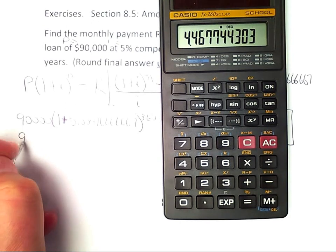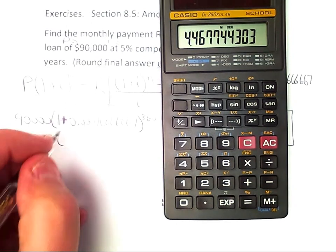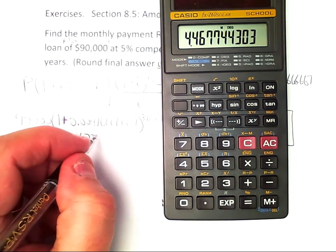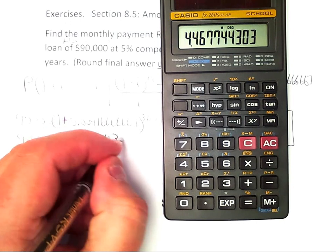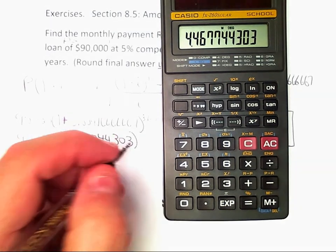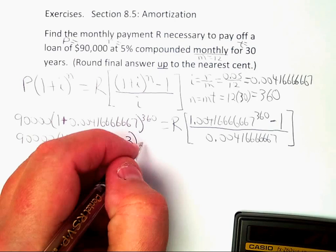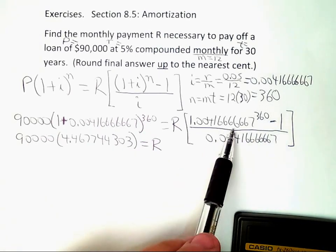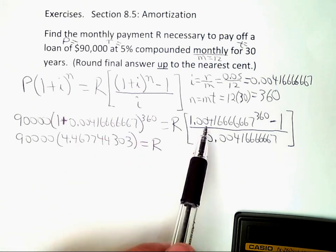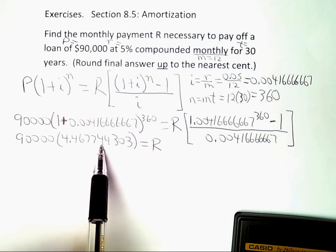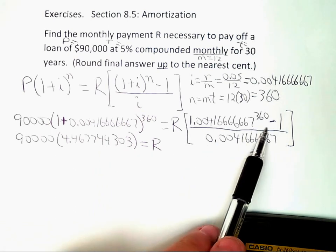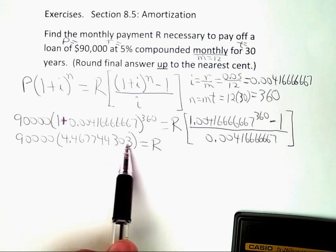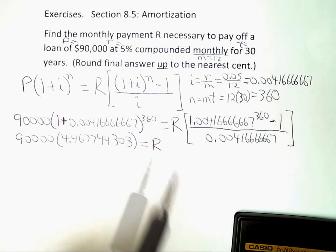So I have 90,000 times 4.467744303, and that's equal to R times this quantity here. And this quantity here, I've already calculated that to be 4.467744303. So if I subtract 1 from it, it becomes 3.467744303, and then I can just divide it by that number.